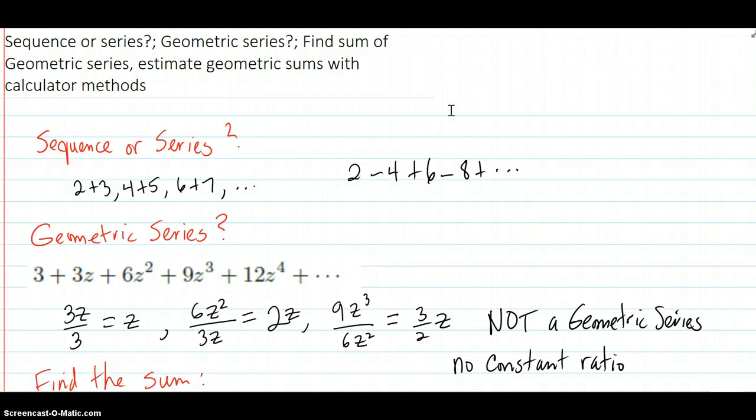Now we're going to do some examples of a series that you will find in the book. So, the first one is a sequence or a series. You do have some plus signs, but you realize that 2 plus 3 is 5, 4 plus 5 is 9, 6 plus 7 is 13. It's just a sequence of numbers. So that is a sequence.